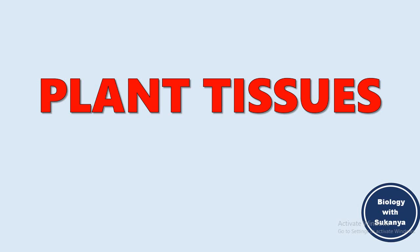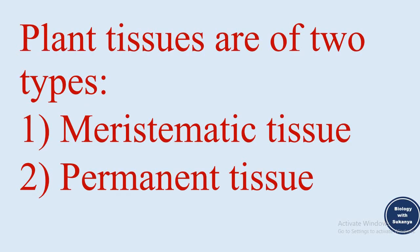Hello students, in this lecture we will be talking about plant tissues. Plant tissues are of two types: meristematic tissue and permanent tissue.